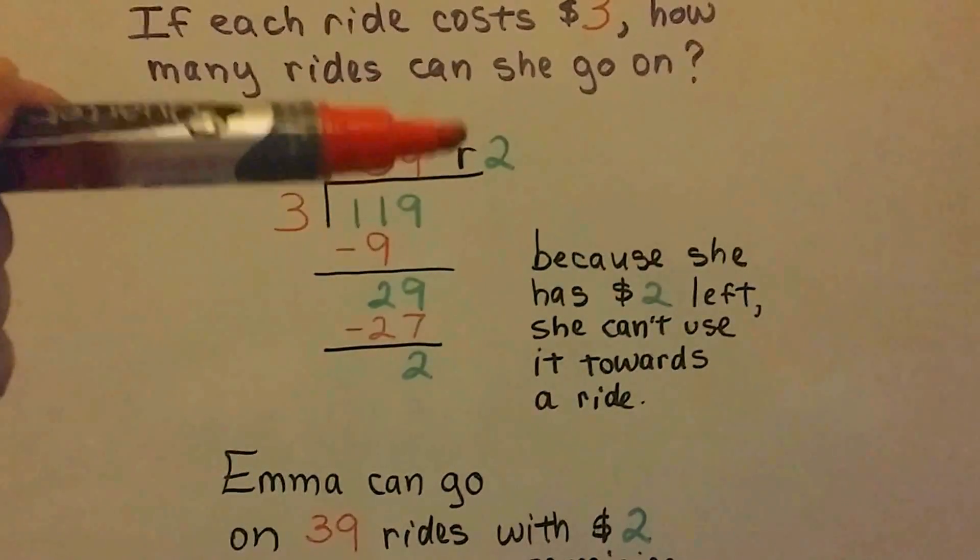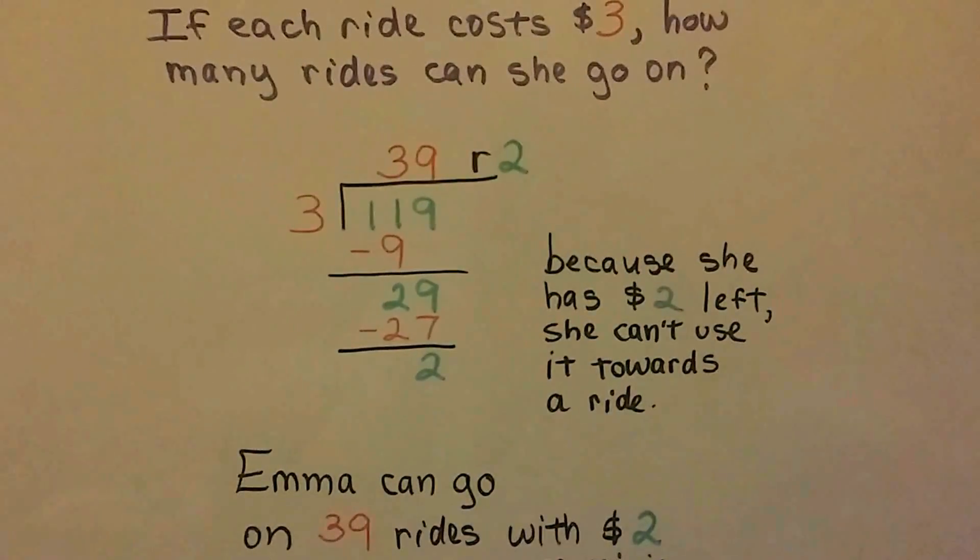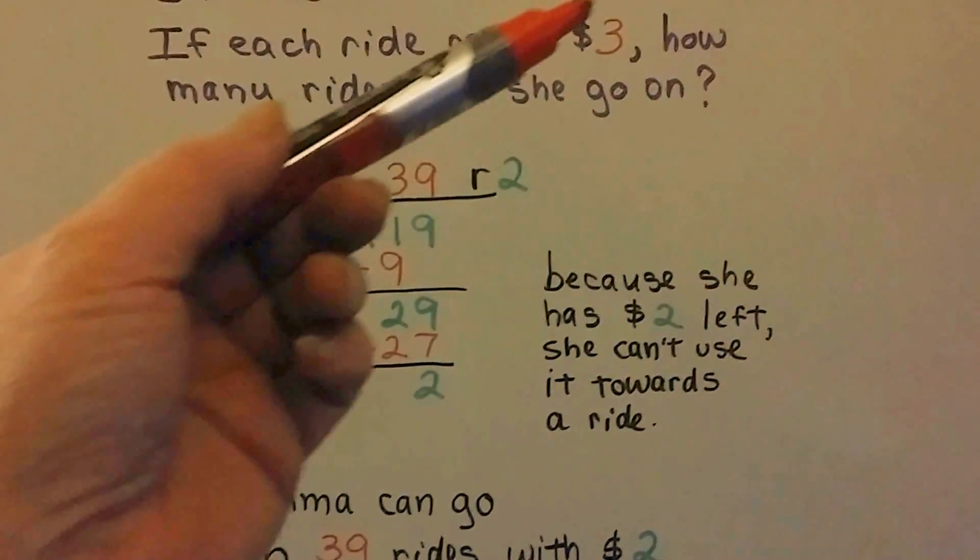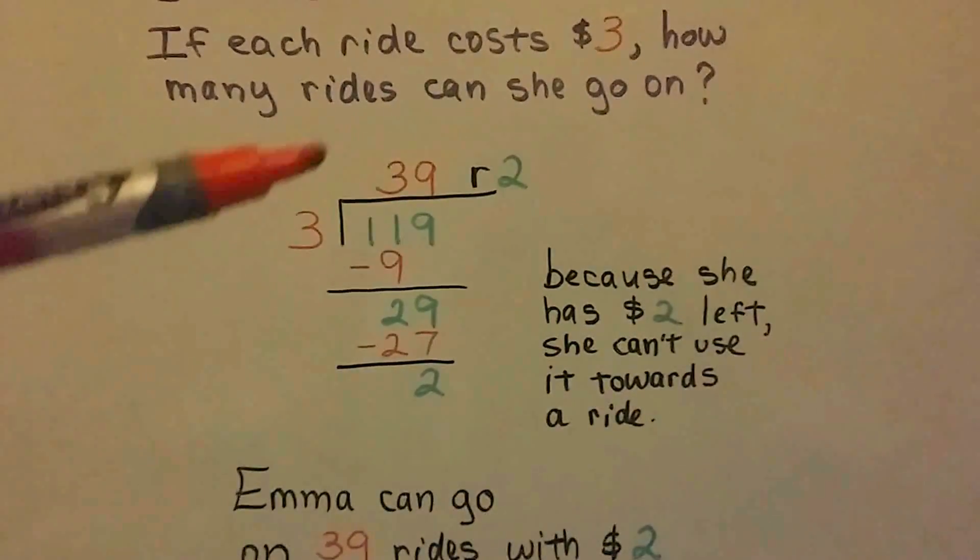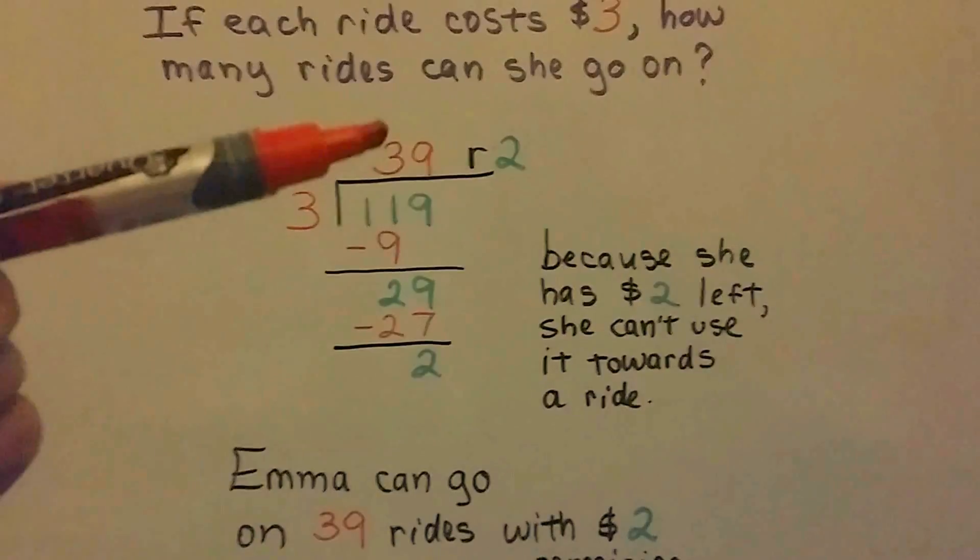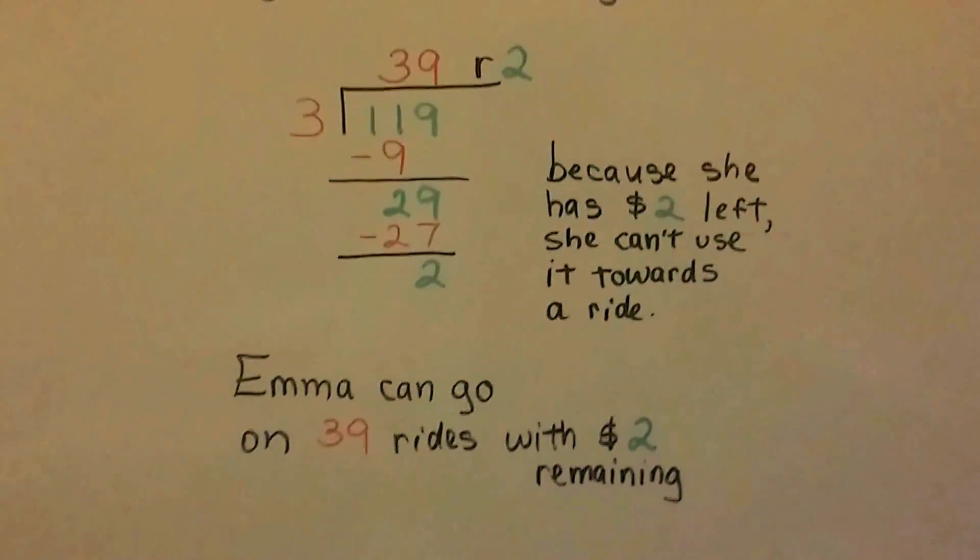So that means, because she has a remainder of 2, she has this $2 left, she can't use it towards a ride, can she? It costs $3 for a ride. So, she can go on 39 complete rides and have $2 left over.